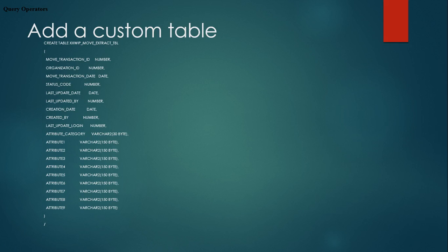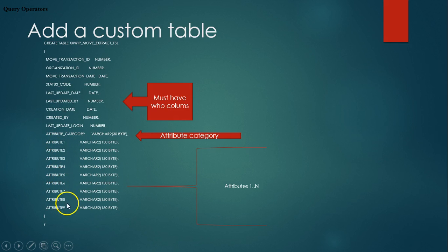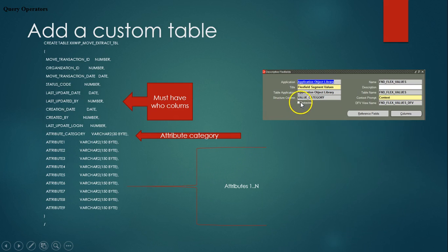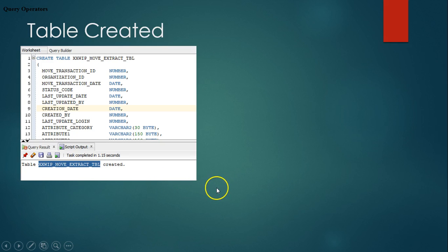Now we'll create a custom table. The custom table should have WHO columns, an attribute category column, and attribute columns. You don't have to name the attributes with the same name, but it's preferred to use the format attribute one through N. The structure column in the DFF corresponds to the attribute category in your table — in the FND example it's called 'value category,' but in the table I'm creating I'm specifying it as 'attribute category.' I've created the table and ran the script.